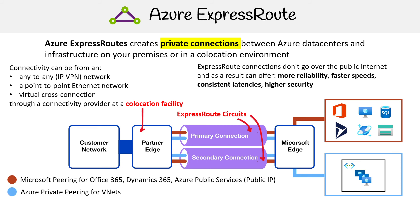The other option is doing private peering for a VNet. The idea is that you have a private VNet where the subnets are private, and you want a direct way to access it. So those are the two routing options.